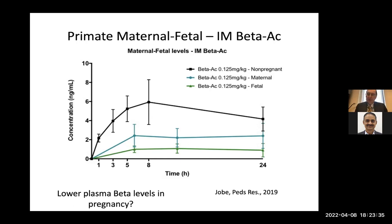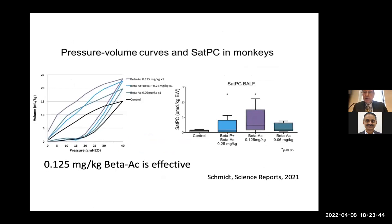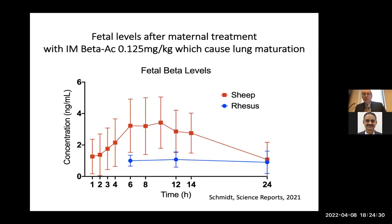At the low dose of beta acetate, we get a pressure-volume response and a surfactant response in the BAL of preterm monkeys. Note that beta acetate alone is not available on the market — you can only get beta phosphate, dexamethasone phosphate, or celestone. Plasma levels in sheep treated with this low dose show maternal levels of about 3 nanograms per milliliter and fetal levels of about 1 nanogram per milliliter, and these animals responded with lung maturation.